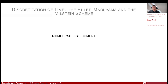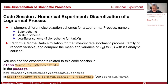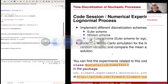To conclude, I have a numerical experiment — you can find it in the repository FinMath experiments, not in the lecture repository. It's called Monte Carlo scheme test. It does an Euler scheme, a Milstein scheme, and a log Euler scheme for the stochastic process dX = sigma * X * dW — a very simple stochastic process. The log Euler scheme discretizes the logarithm and creates the Euler scheme for the log, then transforms back.